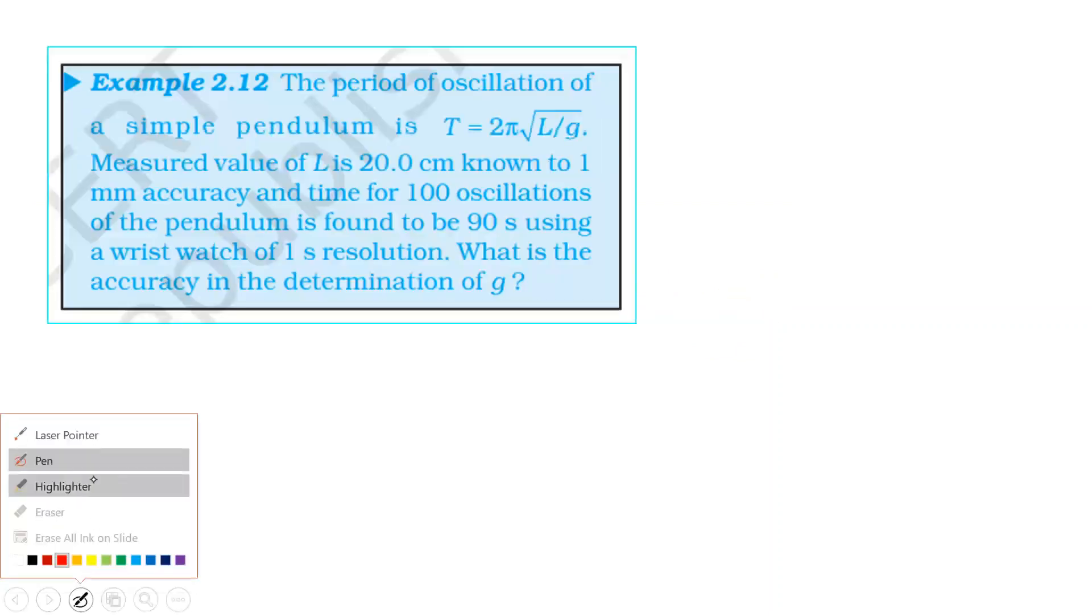Next question. The period of oscillation of a simple pendulum is T equals 2π root of L by g. Measured value of L is 20 cm known to 1 mm accuracy. And the time for hundred oscillations of the pendulum is found to be 90 seconds, using a wristwatch of 1 second resolution.